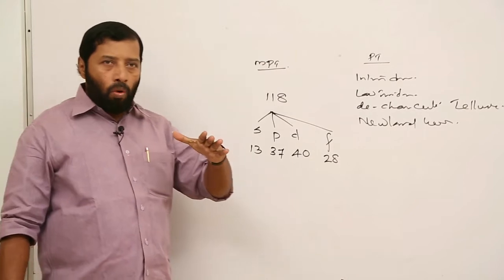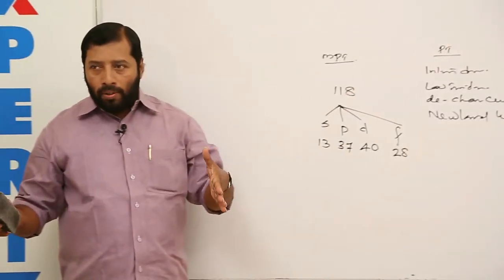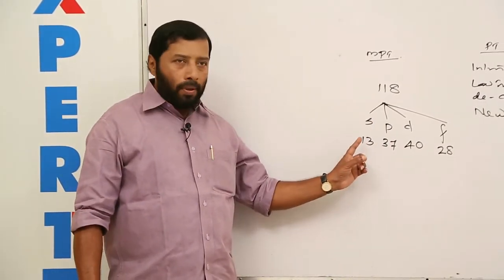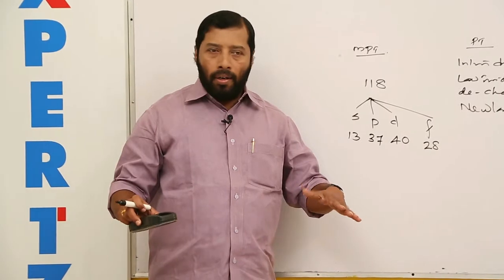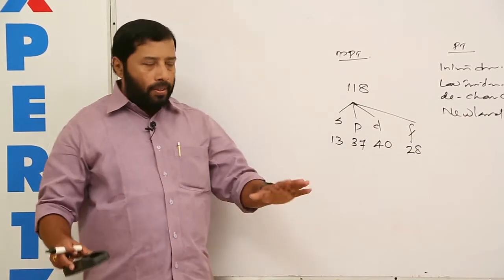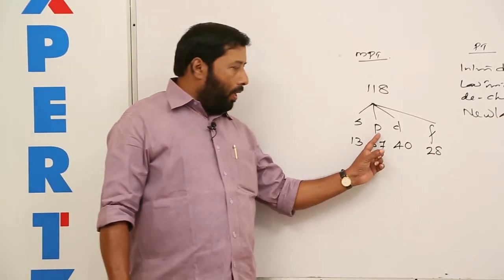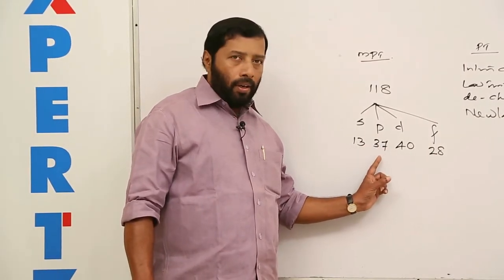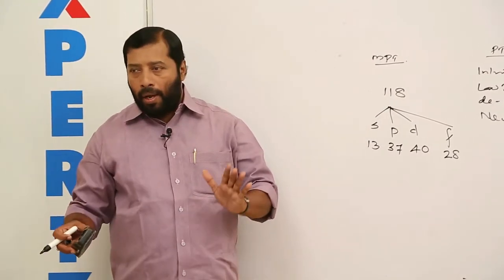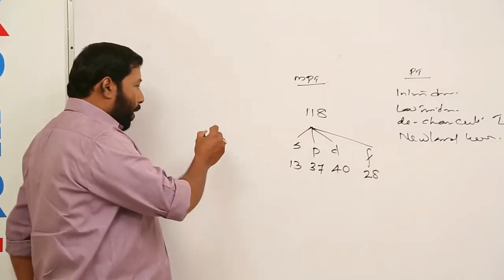The modern periodic table consists of a total of 118 elements categorized into four blocks: S, P, D, and F. S stands for sharp, P for principal, D for diffuse, F for fundamental. S block has 13 members, P has 37, D has 40 members, and F block has 28.